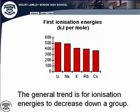If we look at trends going down a group, the general trend is for ionization energy to decrease. The reason is that electrons are further away from the nucleus — distance comes into play — and being at a higher principal energy level means there are more electrons at lower principal energy levels between them and the nucleus, so you get a shielding effect occurring.